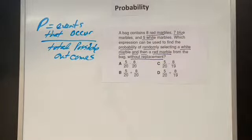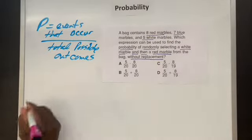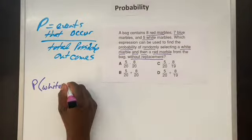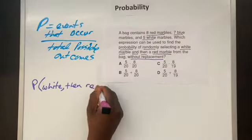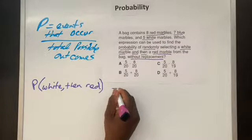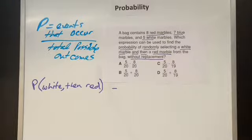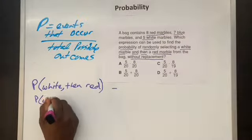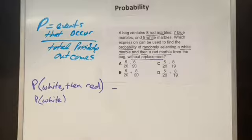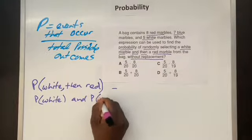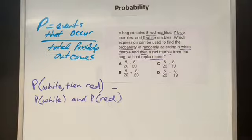So let's go ahead and write this problem as a probability. They said what is the probability of selecting a white marble and then a red. That's what we're talking about. What is the probability of that happening? Now the way we can set this up is we can break this apart. So what we really want to know is what is the probability of selecting a white marble, and then the probability of selecting a red marble, and remember is without replacement.